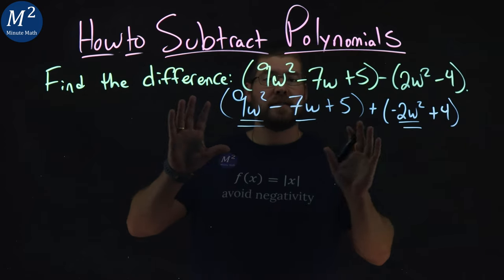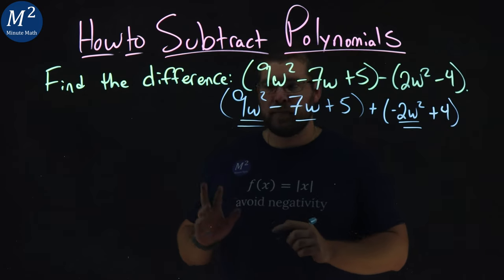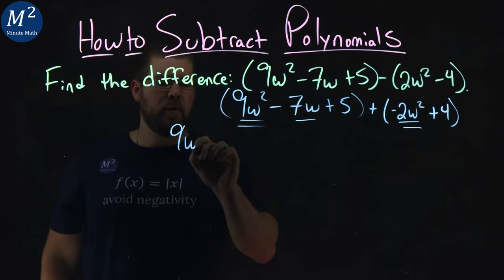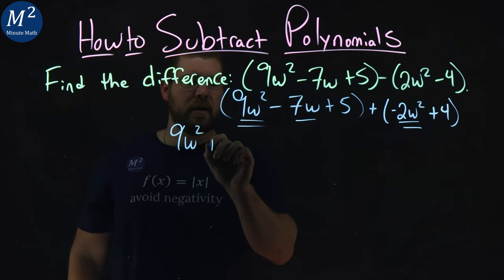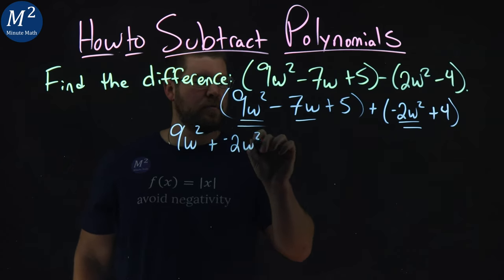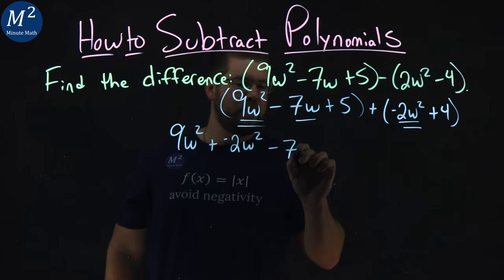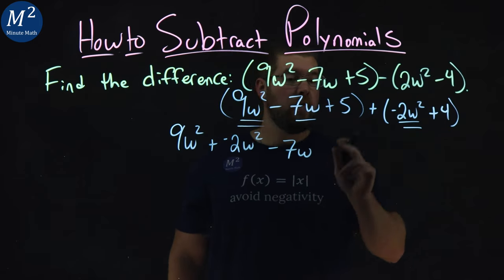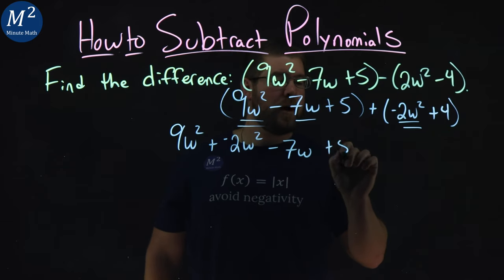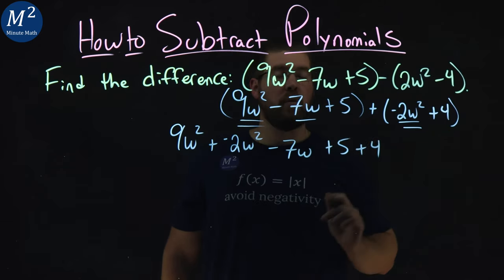Let's rewrite this to have our like terms next to each other. Start with 9w squared, and then we have plus a negative 2w squared. Next is just the plain w's. We bring down minus 7w. From there, just the numbers: we add 5 and add 4.